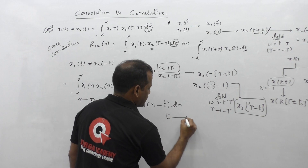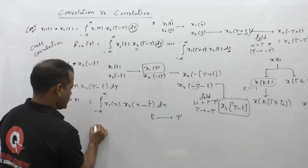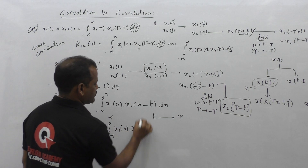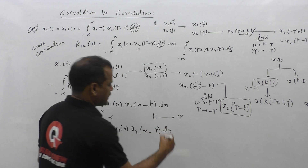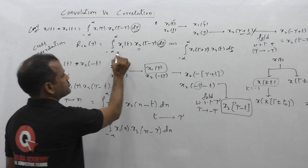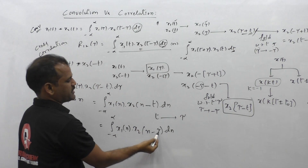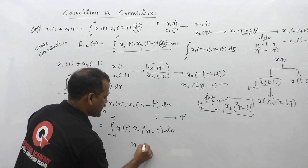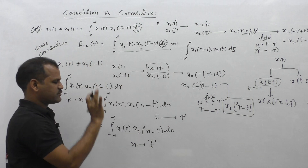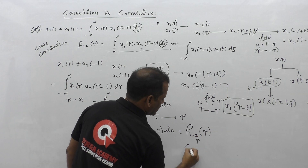After this step, I take t tending to tau — replacing the small t value with tau. So the expression becomes: integral from minus infinity to plus infinity of x1(n) * x2(n - tau) dn. Observe that this is exactly in the form of the cross-correlation: integral of x1(t) * x2(t - tau) dt — with n as a dummy time index like t. Therefore this is nothing but the cross-correlation function r12(tau) of x1(t) and x2(t).